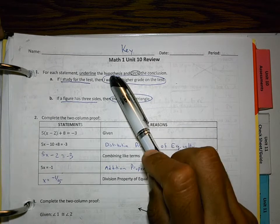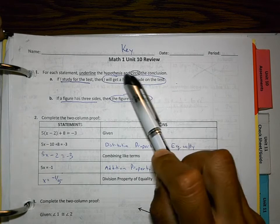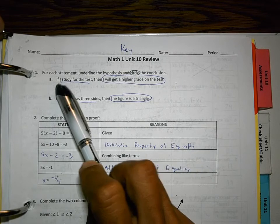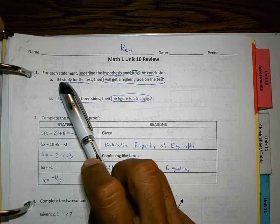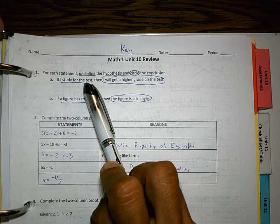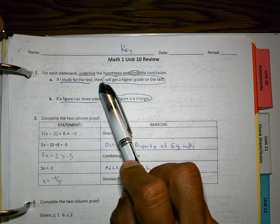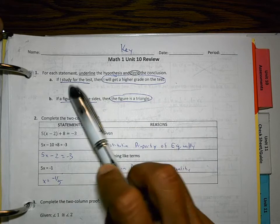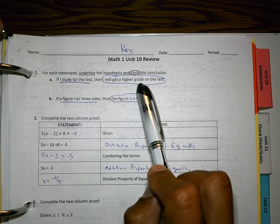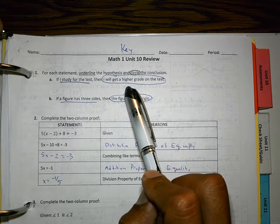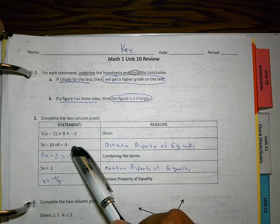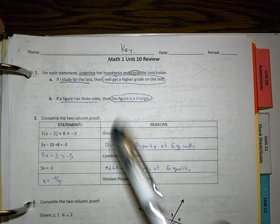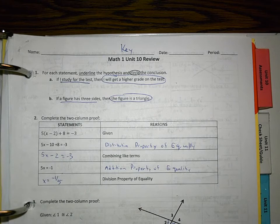10.2 covered hypothesis and conclusion. The hypothesis is everything after the if. If I study for the test, that is your hypothesis. Then lets you know that the conclusion is about to come. I will get a higher grade on the test. If this happens, then this should happen as well. That's what a hypothesis and conclusion are. So, we underline a figure has three sides. The figure is a triangle is the conclusion for number 1B.